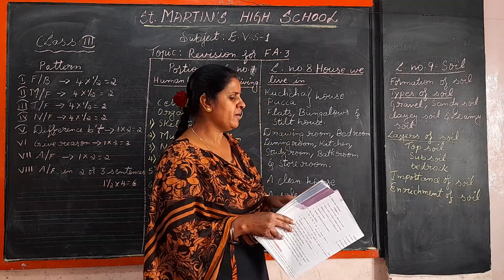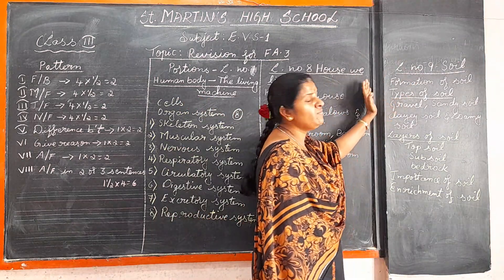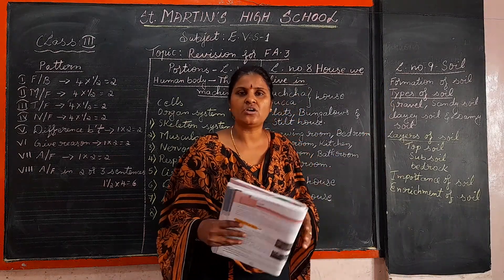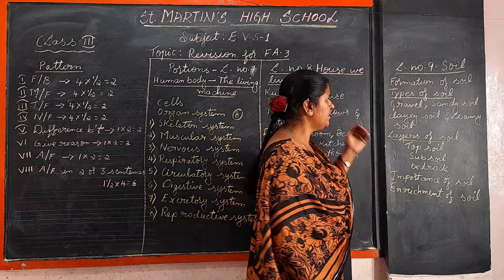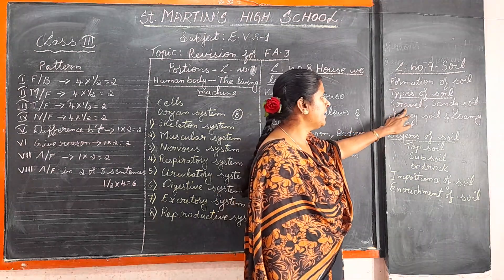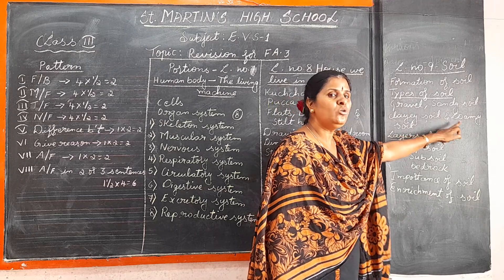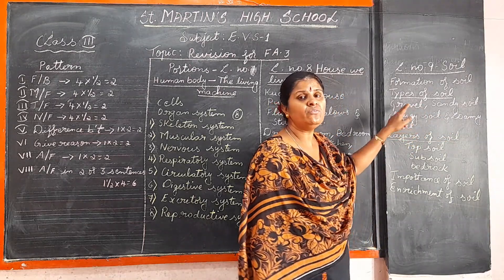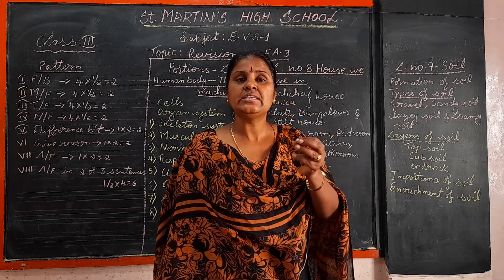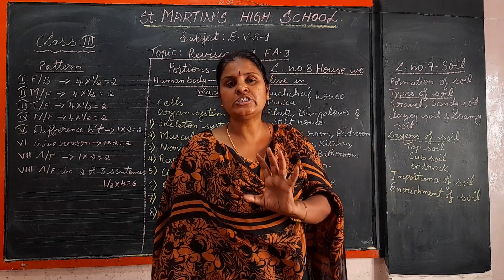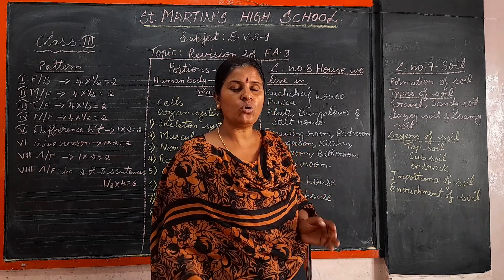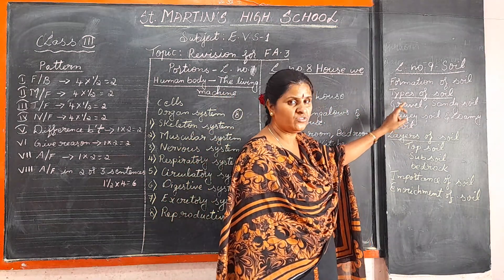Next, coming to lesson number 9 — Soil. We learnt about the formation of soil. Soil is formed by the weathering of rocks. There are four types of soil: gravel, sandy soil, clay soil, and loamy soil. Gravel is used in the construction of roads — only plants like cactus can grow in it.